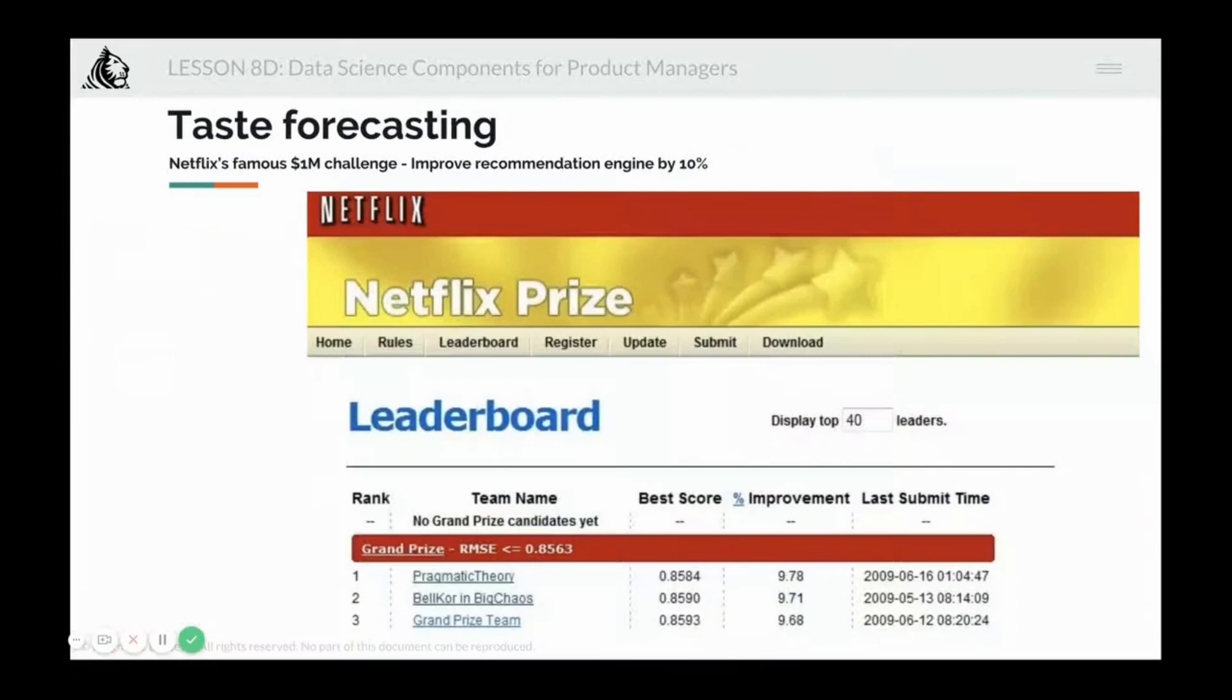To give an example of taste forecasting for predictive analytics, Netflix in early days had a very famous challenge. The challenge was, can you improve our recommendation engine by 10%? If you do that, you win the $1 million challenge. Whosoever improves their recommendation engine by 10% will get $1 million. It lasted for some decent time. You can see here the number one pragmatic theory, they were able to come very close to beating or meeting the 10% challenge.